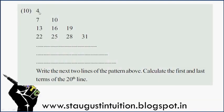Question number 10. Here is the number sequence: 4, 7, 10, 13, 14, 19, 22, 23. There is another sequence arranged in lines/rows.